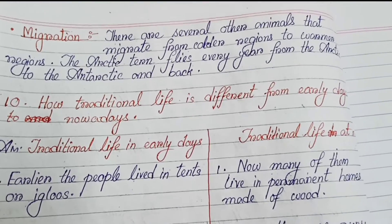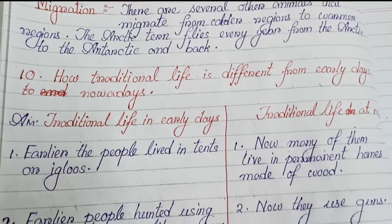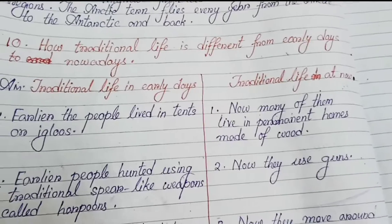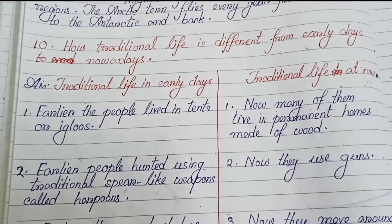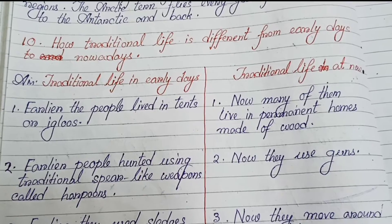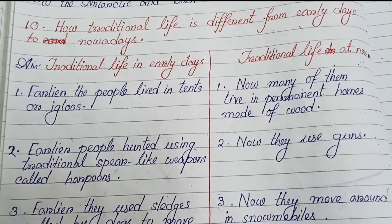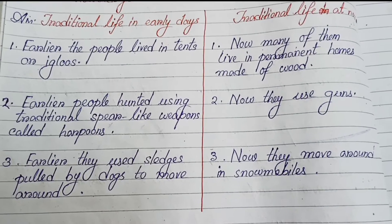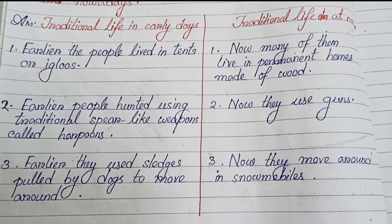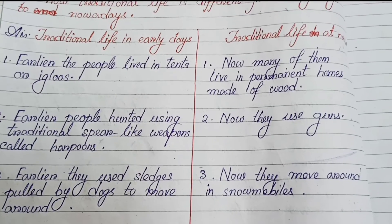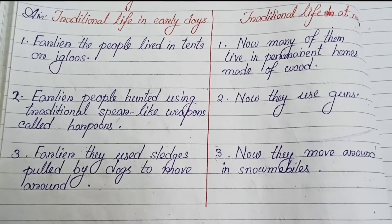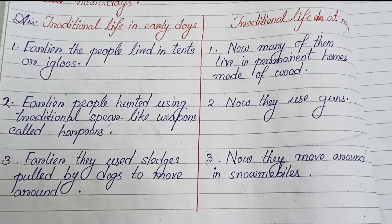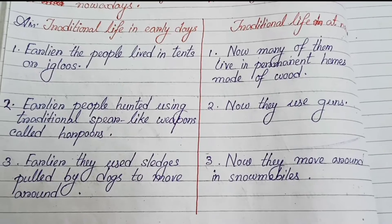Number ten: How is traditional life different from early days to nowadays? Earlier, people lived in tents; now many live in permanent homes. Earlier, people hunted using traditional spear-like weapons called harpoons; now they use guns. Earlier, they used sledges pulled by dogs to move around; now they use snowmobiles.